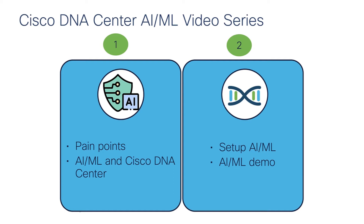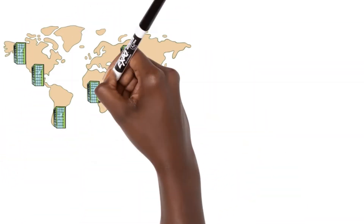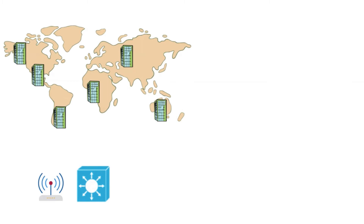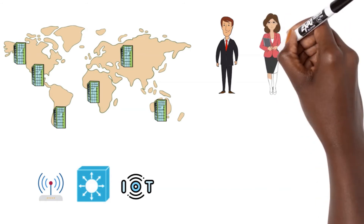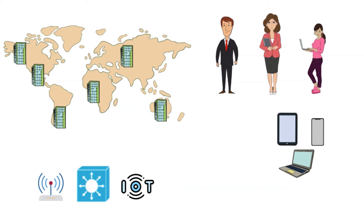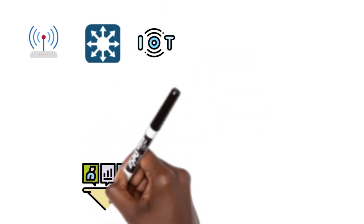In the second video, I will do a demo of the AI ML features in Cisco DNA Center. Imagine a very large enterprise with offices across the globe — they have a large network with thousands of APs, switches, and IoT devices, and hundreds of users bringing multiple devices per user into the network. Manually analyzing and troubleshooting the traffic flowing through thousands of APs and switches is a herculean task even for an experienced NetOps team.